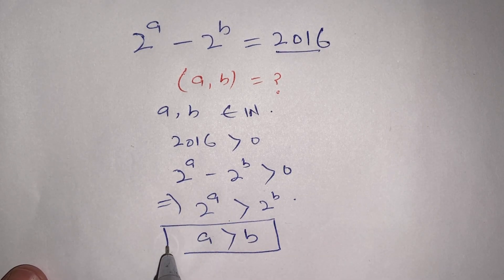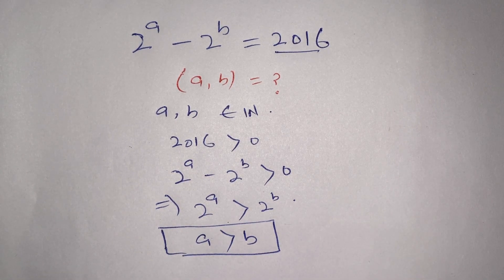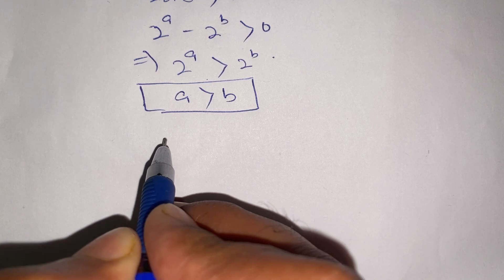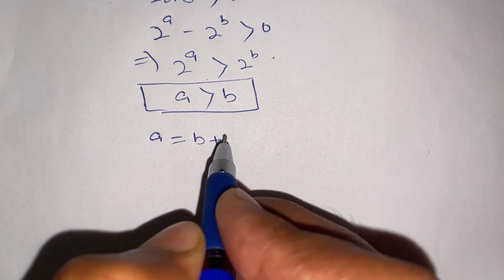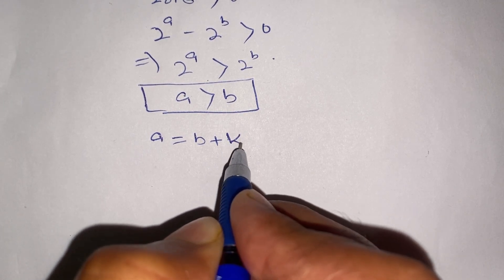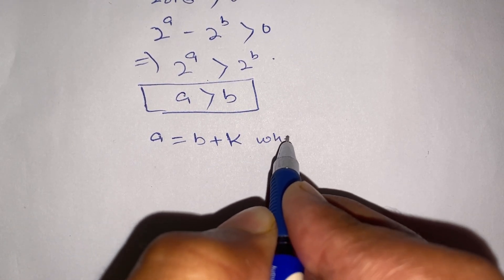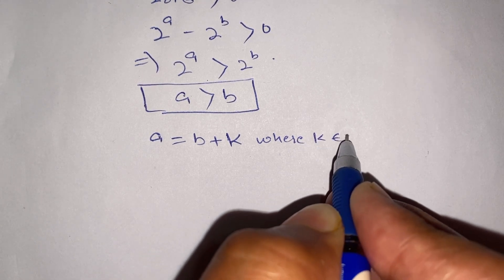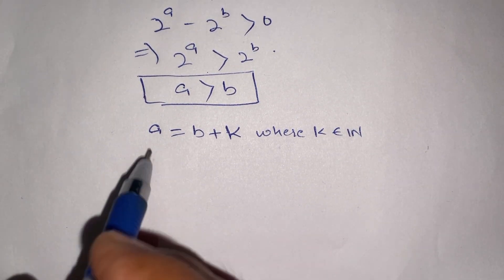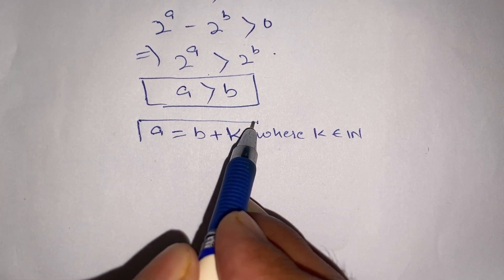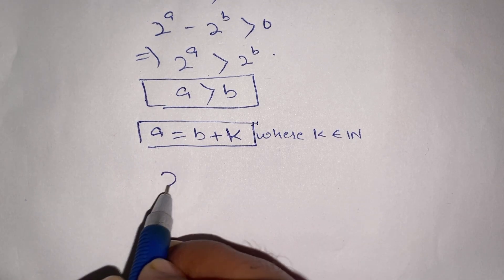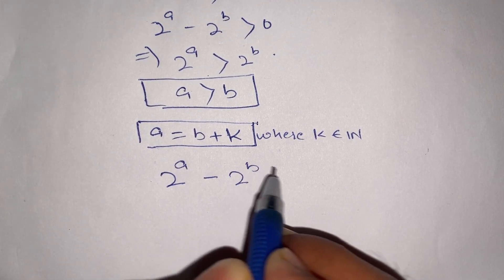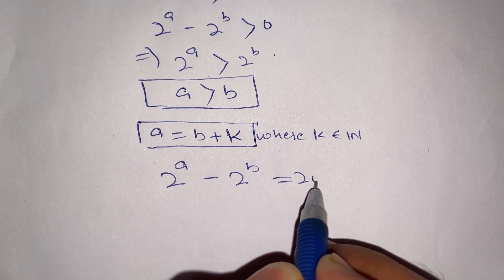From this step we conclude that a is greater than b. Now in the next step, a can be written in terms of b: we have a equals b plus a constant k, where k belongs to the natural numbers. In place of a we substitute a equals b plus k. Our given equation is 2^a minus 2^b equals 2016.